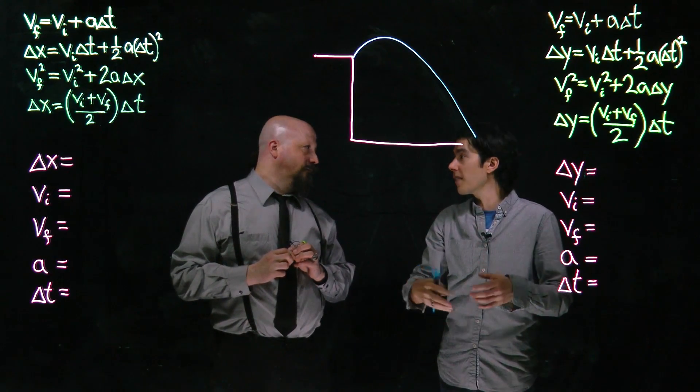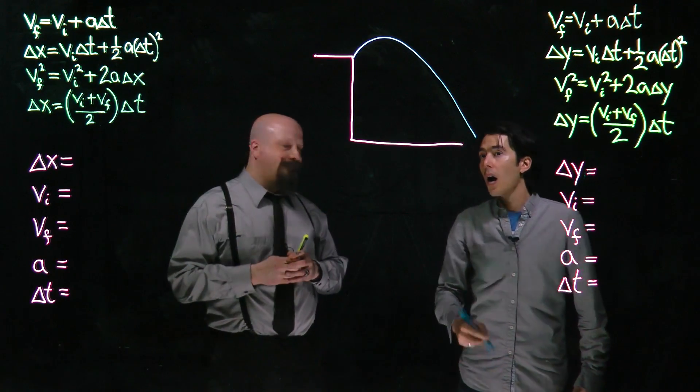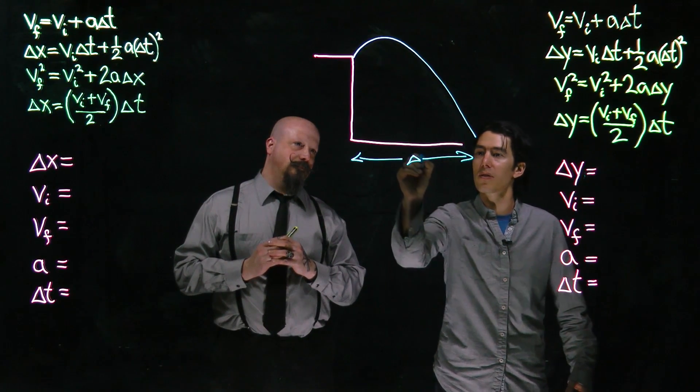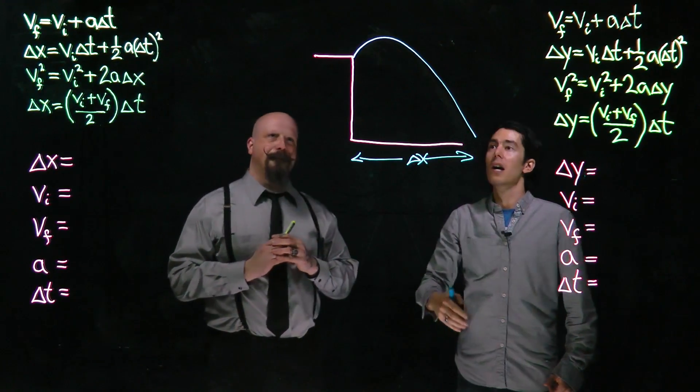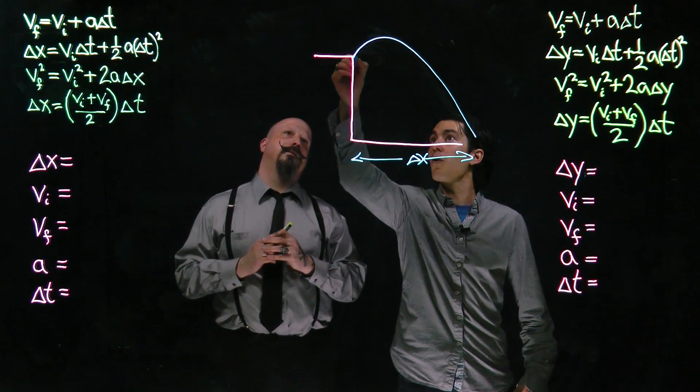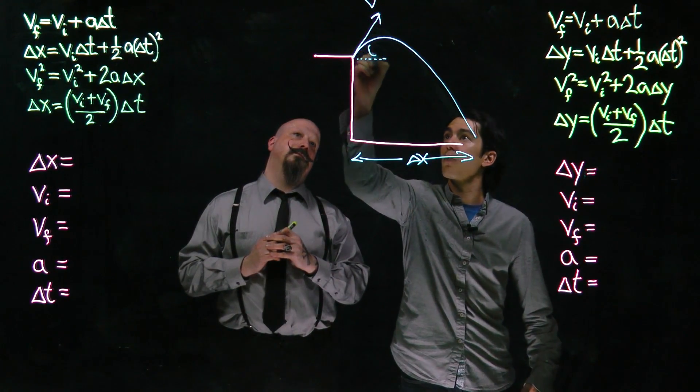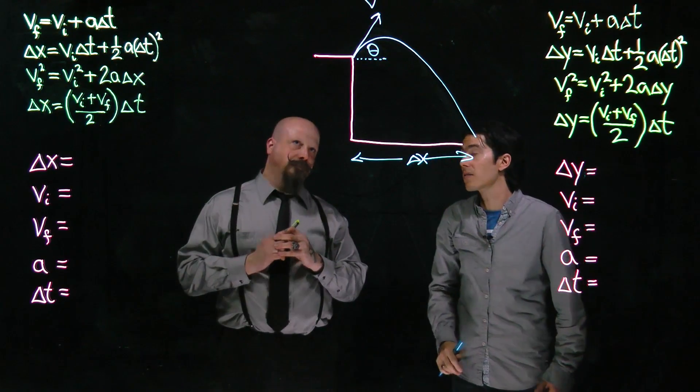So why don't we pick a few numbers that we're given and see what we would always do. So what do we know? Well, let's say that we know that the object hits the ground a certain distance delta x from the side of the cliff. Let's say because we launch it, we know what the initial speed is, and we select our own direction too. So we have v and theta as the known quantity.